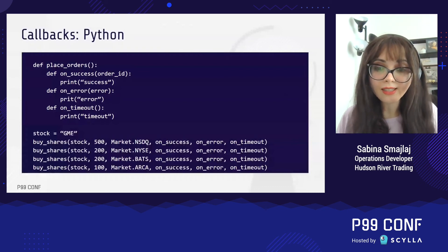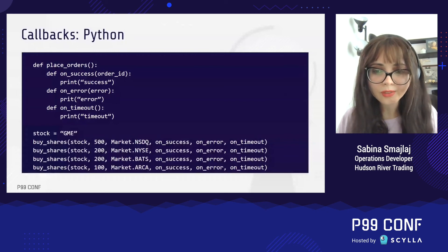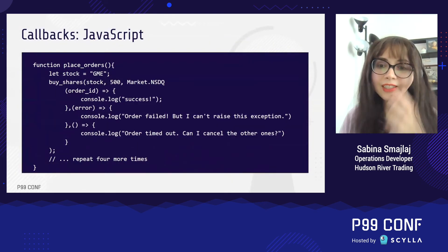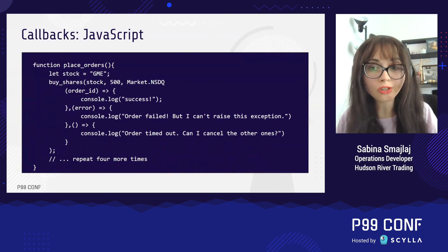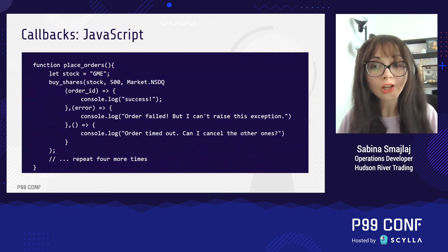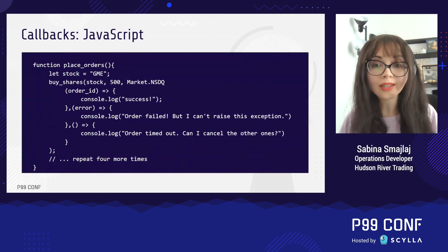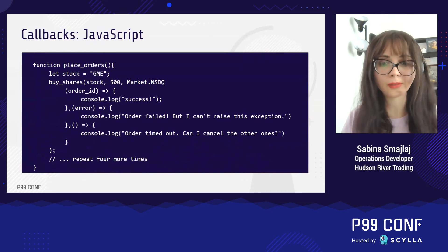The code doesn't really read top to bottom, since you have to keep jumping back up to look at the callback definitions. JavaScript makes it easy to define anonymous functions where you don't have to give the function names and can just write them as you go. So if we were writing this code in JavaScript using anonymous callbacks, here's how we would look to send just one of the orders. As you can see, this becomes a little bit verbose.